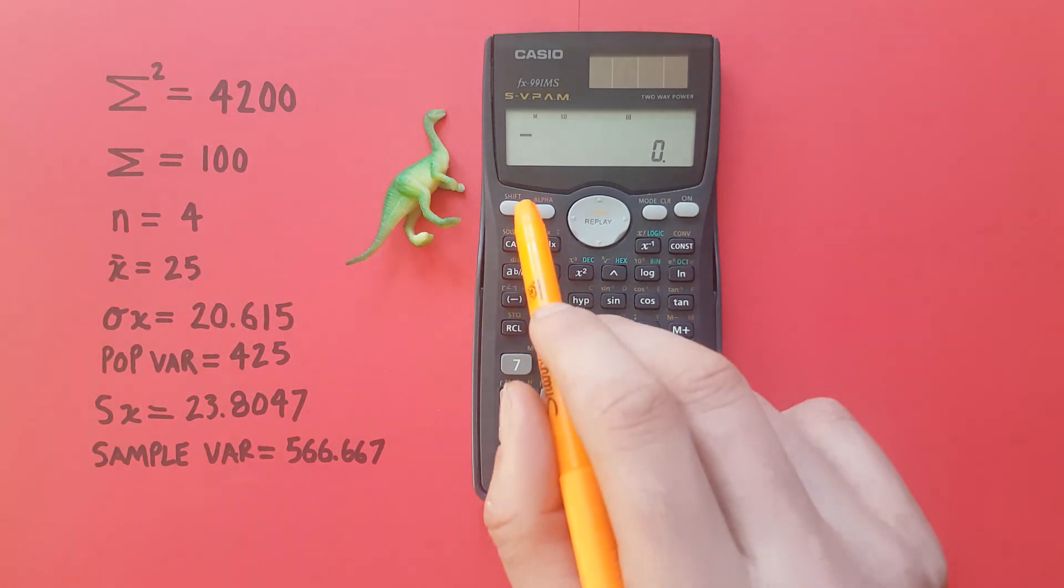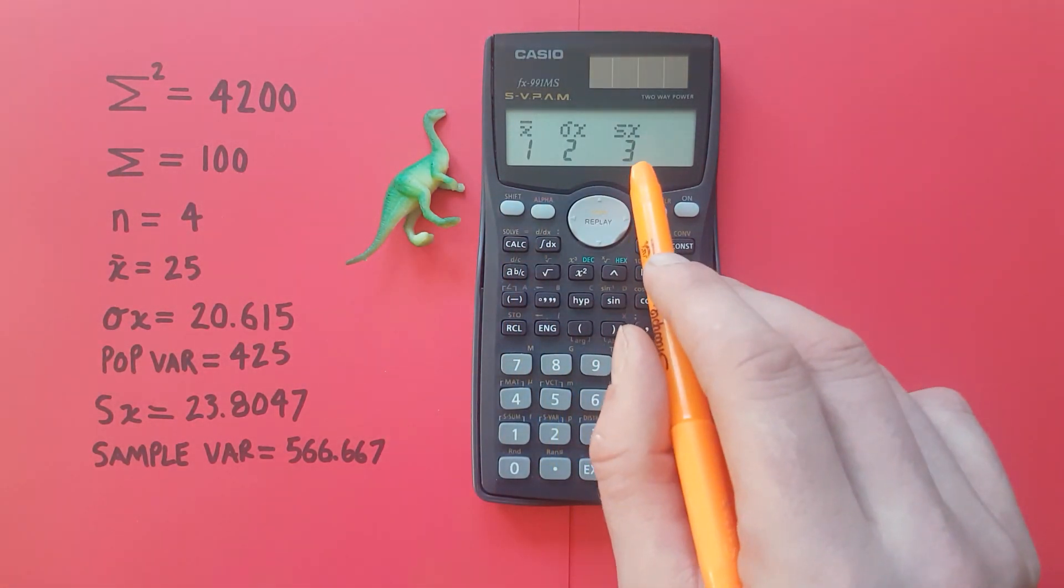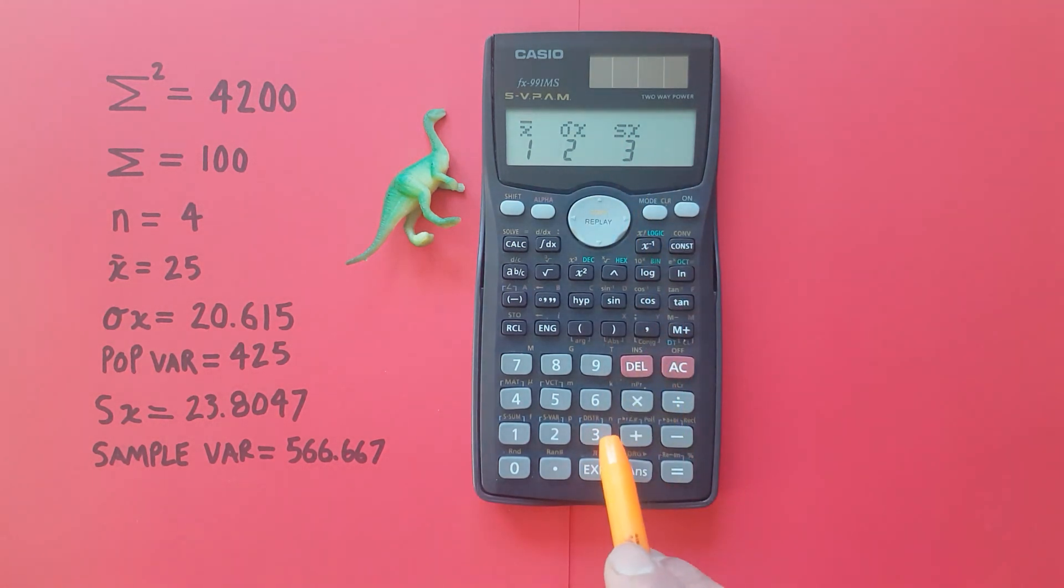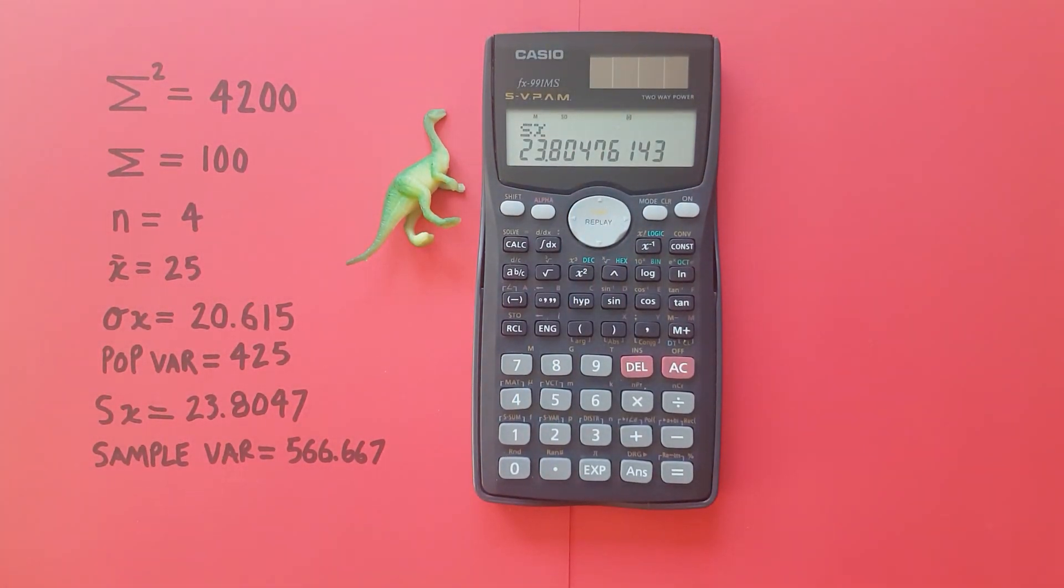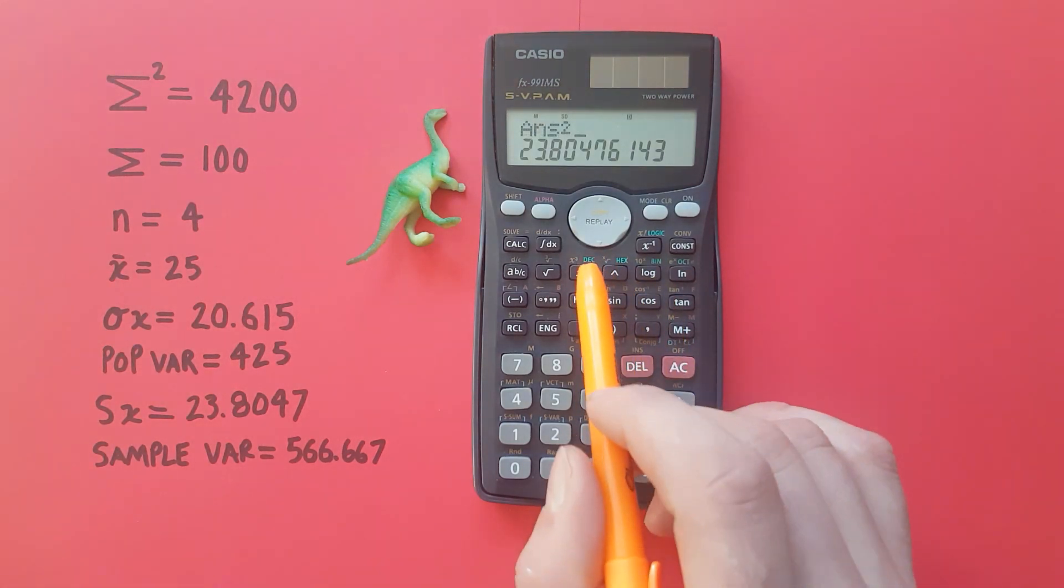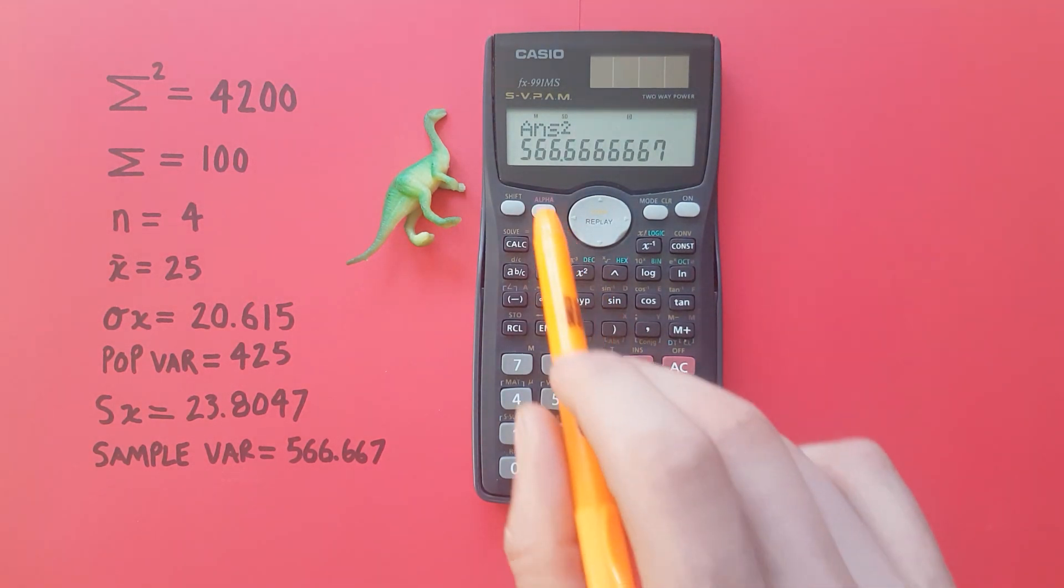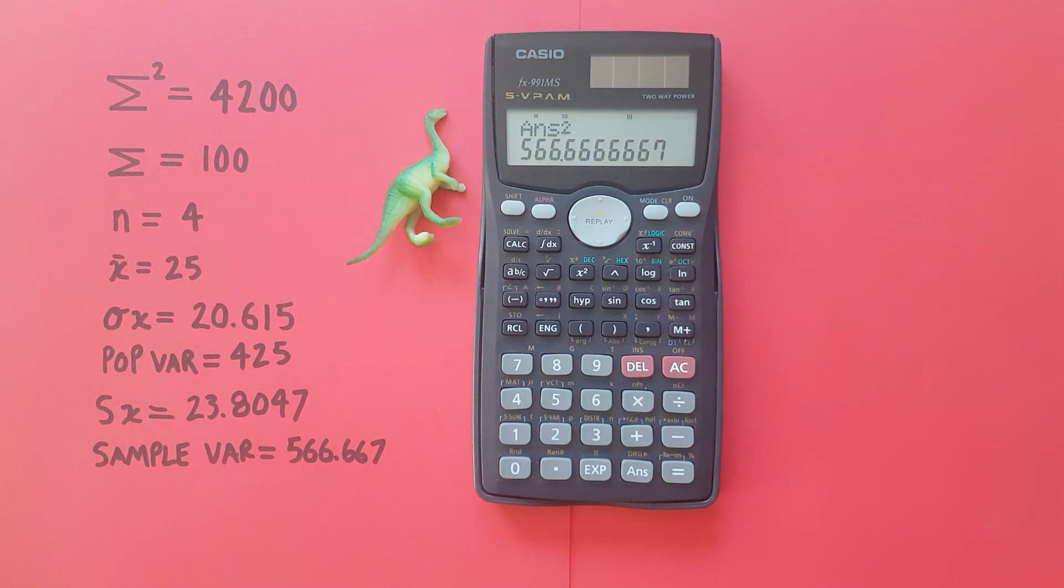And we can get the next piece of data. Shift 2, 3 which is our sample standard deviation. 3 equals a sample standard deviation of 23.80476 etc. And again we can get our sample variance by squaring this number and getting a sample variance of 566.666 etc.